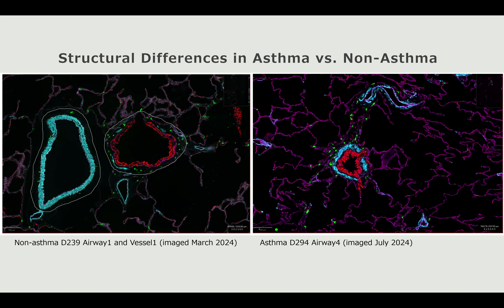Here are more structural differences in asthma versus non-asthma slides. On the left I have non-asthma donor 239, airway 1 and vessel 1, imaged in March 2024. On the right is asthma donor 294, airway 4. In the non-asthma slide the airway is open and relaxed with discontinuous muscle around it, but in the asthma donor the muscle forms a continuous line around the airway — a super contracted airway — so you can really see the effects of asthma. The mast cells also appear more spread out in the non-asthma slide, whereas in the asthma slide they seem more clustered around the airway.